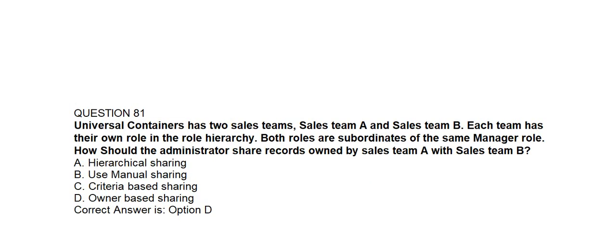Question number eighty-one. Universal Containers has two sales teams, Sales Team A and Sales Team B. Each team has their own role in the role hierarchy. Both roles are subordinates of the same manager role. How should the administrator share records owned by Sales Team A with Sales Team B? Option A: Hierarchical Sharing. Option B: Manual Sharing. Option C: Criteria-Based Sharing. Option D: Owner-Based Sharing. Correct answer is Option D: Owner-Based Sharing.